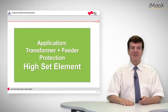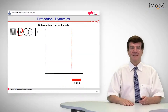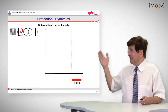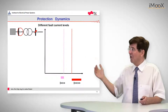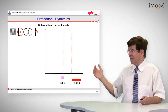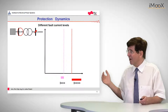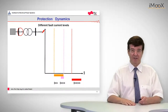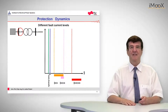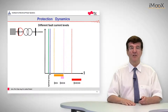Let's look into the high set element of the transformer protection. We have different fault current levels. The highest one is the fault current level upstream of the transformer. The lower one is downstream at the bus bar, for example, and the lowest one is the fault current level at the end of the longest feeder. For completeness, we should also include the nominal currents of the transformer and that of the feeder.